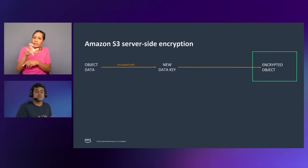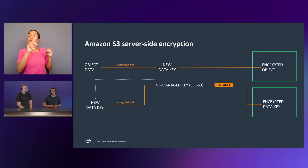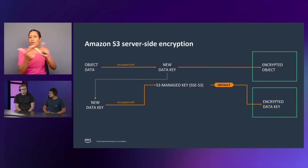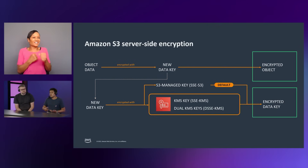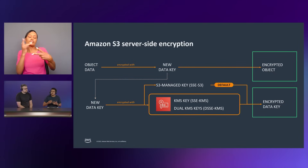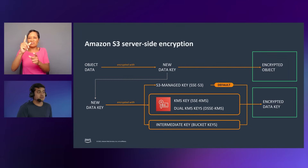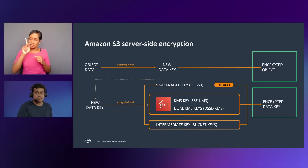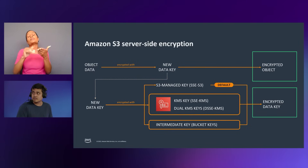What happens to your data when it comes to S3? Object data comes in, it's encrypted with a new data key that we generate, and it's stored durably. Then the options for what to do with that data key come into play. The default encryption is S3 managed keys, SSE-S3 — the base layer of encryption that all customers get on new objects starting earlier this year. Customers can also choose to use AWS KMS, our key management service, to do either SSE-KMS or DSSE-KMS. Customers saved over $80 million with bucket keys since we launched.